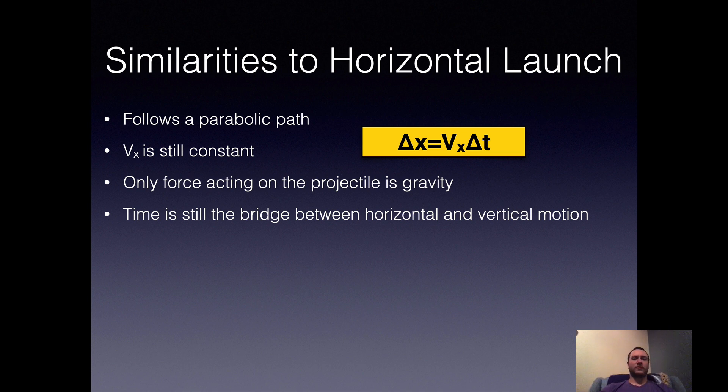Our horizontal velocity still remains constant. So the formula that you see on the screen, Δx = Vx·Δt, remains equally valid for all situations when we're launching a projectile and we're ignoring any force other than the force of gravity. We're still going to use time to bridge between horizontal and vertical motion to be able to perform any necessary calculations.